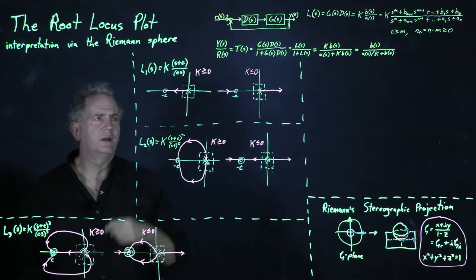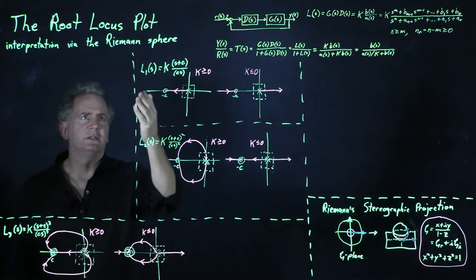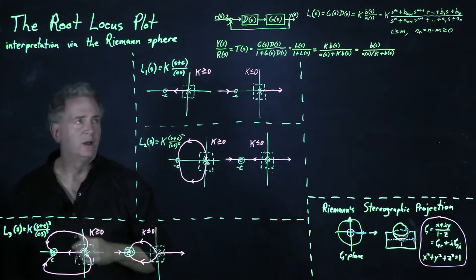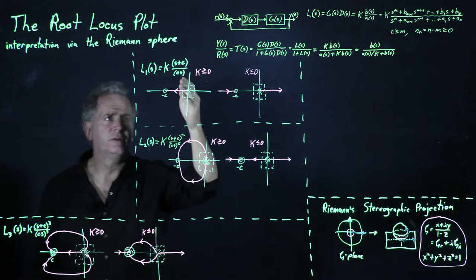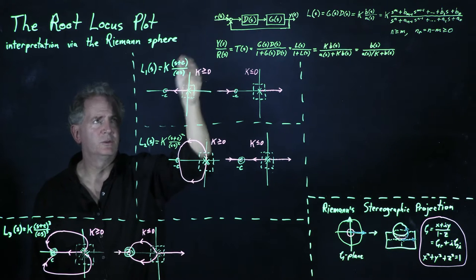And we understood what the root locus plot does by considering three special cases. We considered three problems which are all semi-proper that have an increasing number of poles and zeros. So this has one pole at the origin and one zero at minus C.